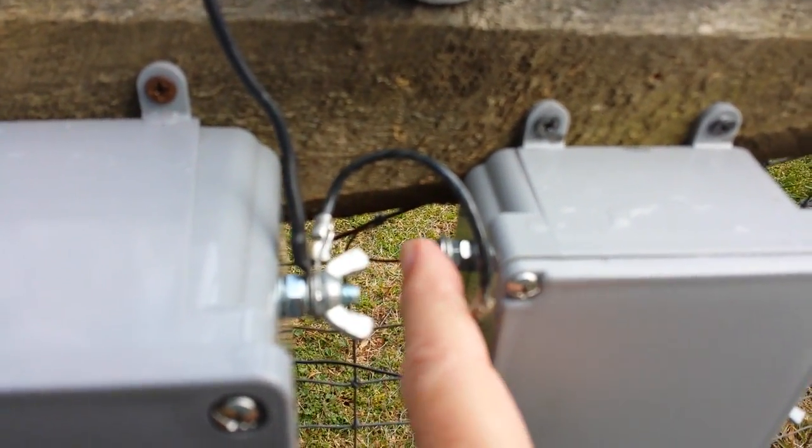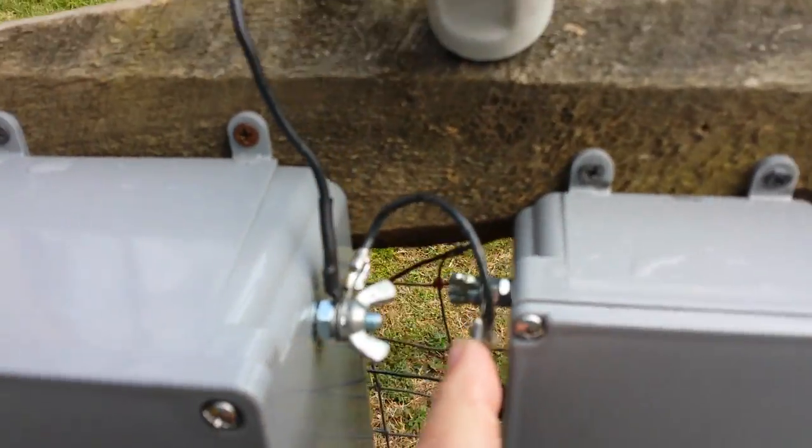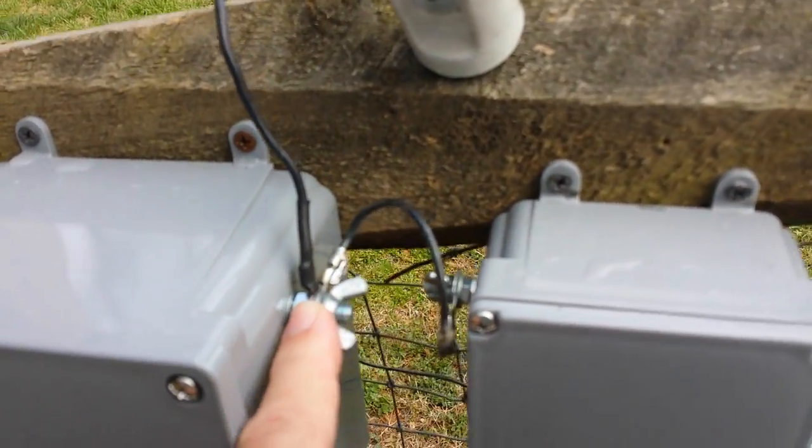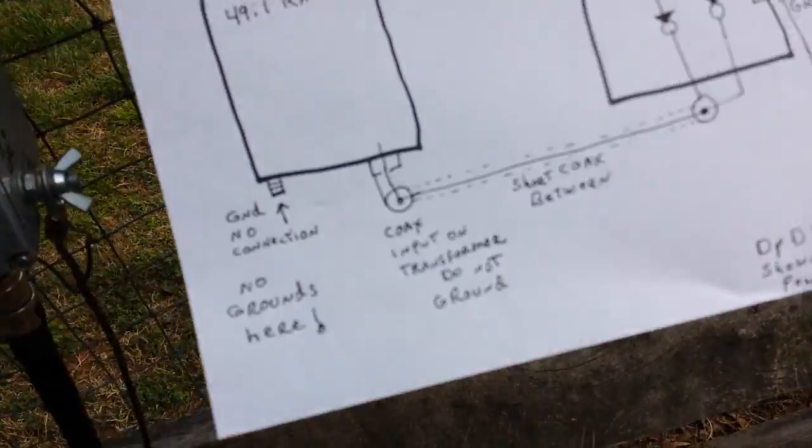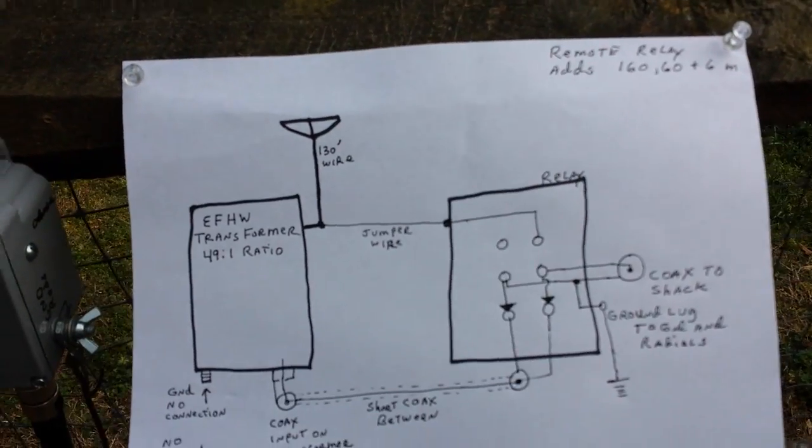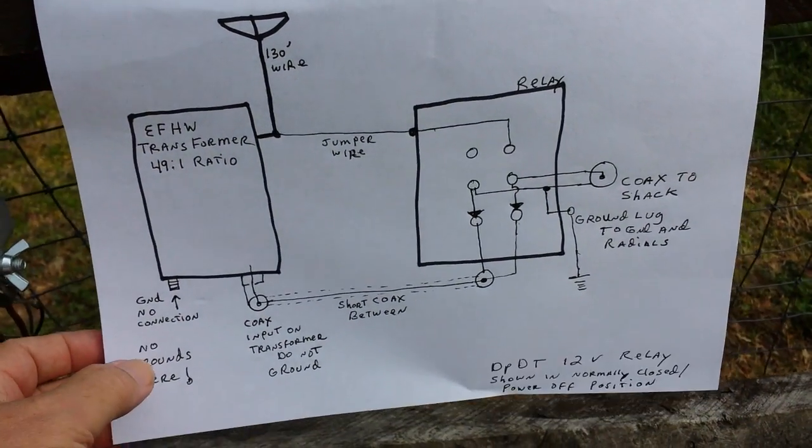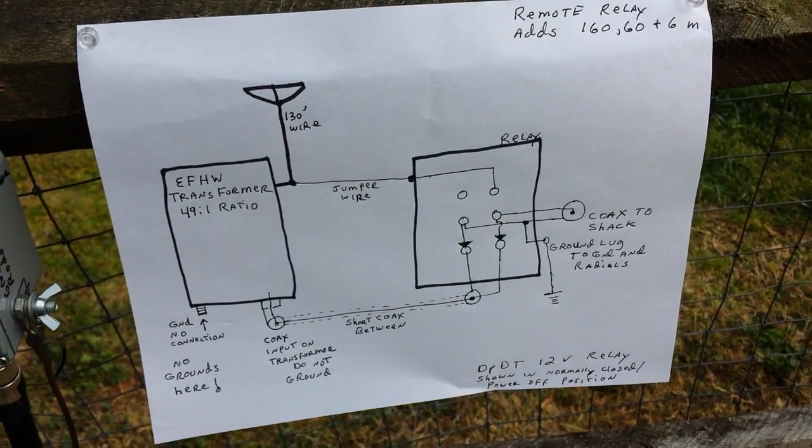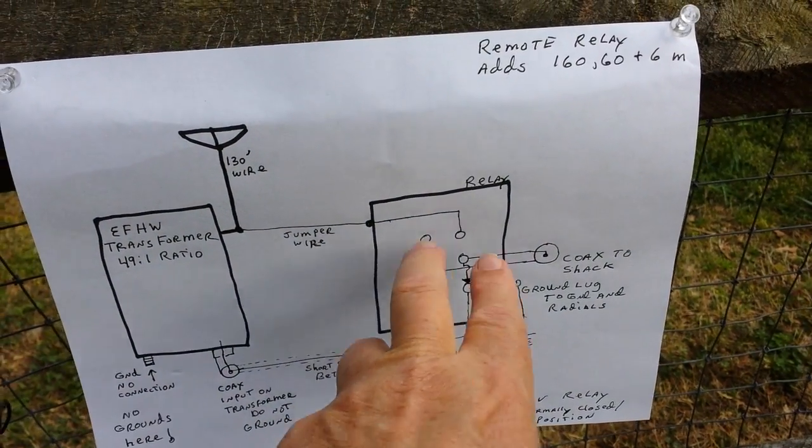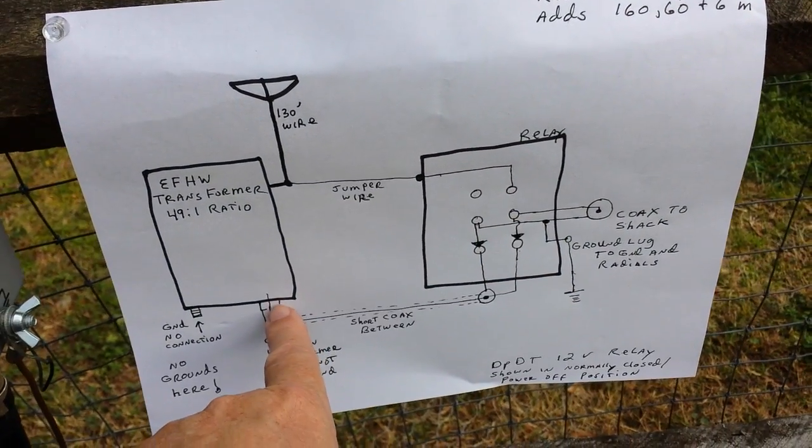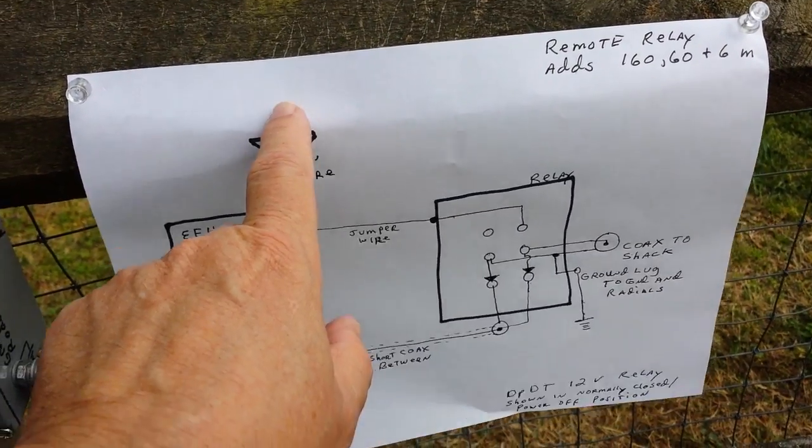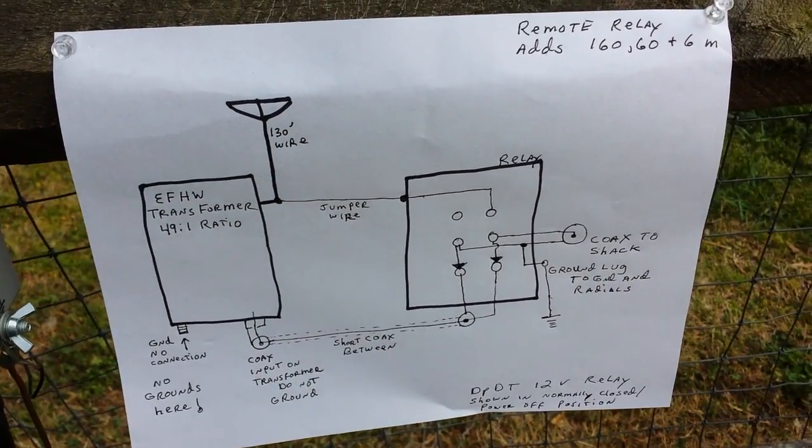So when I want to operate on six meters or 60 or 160, I simply apply power. And the relay flops up, disconnects the ground down here and I'm in business. So now I've got a low SWR on any HF band plus six meters. Really neat system.